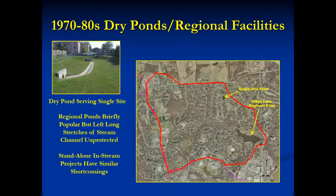In the early 1970s, dry ponds like the one you see in the upper left photo began to appear. A large opening at the bottom of the pond allowed each to drain completely following a storm. These ponds were intended to reduce downstream flooding. Over time, the size of the pond steadily increased until regional ponds came into being. However, we soon learned that dry ponds did little to protect aquatic resources from other stormwater impacts.